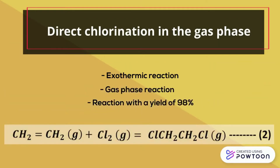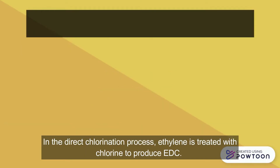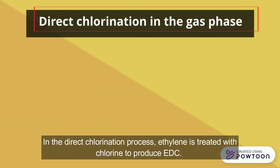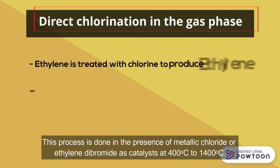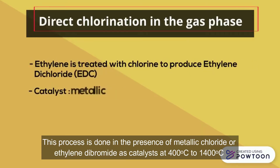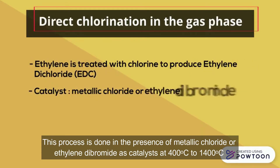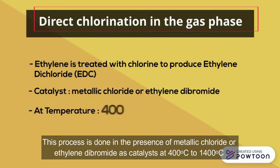The reaction process occurs with a yield of 98 percent. In the direct chlorination process, ethylene is treated with chlorine to produce ethylene dichloride. This process is done in the presence of metallic chloride or ethylene dibromide as catalysts.